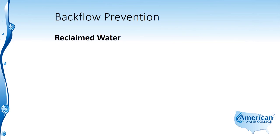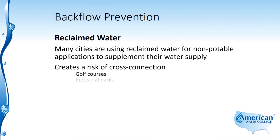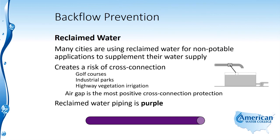The final thing in this lesson is reclaimed water. Many cities are using reclaimed water for non-potable applications to supplement their water supply, and this creates a risk of cross-connection. Places where it's used include golf courses, industrial parks, and highway vegetation irrigation projects. The air gap is the most positive cross-connection protection and is recommended in these circumstances — where a potable water system also supplies water to irrigate a golf course using reclaimed water, there should be an air gap between the potable water system and the mixed tank. Keep in mind that reclaimed water piping is purple to designate that it's not a potable water system.